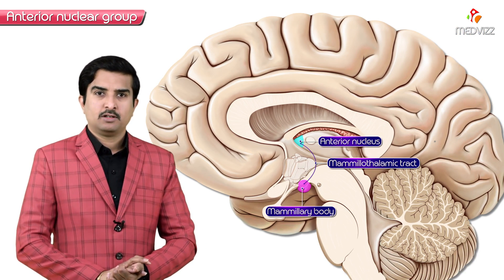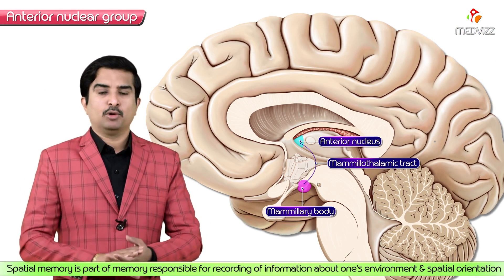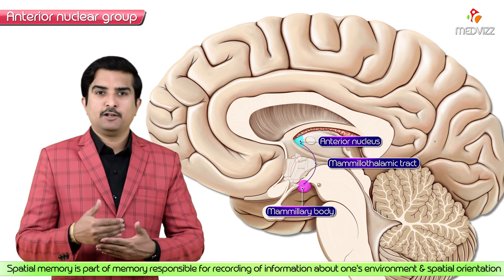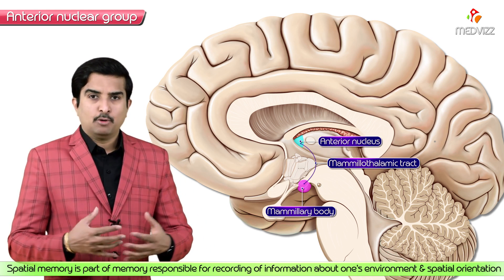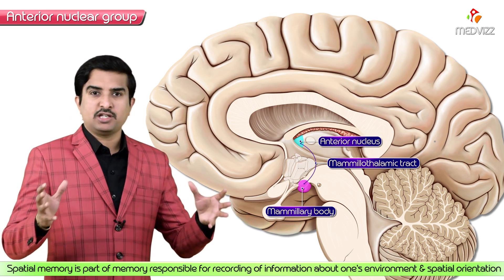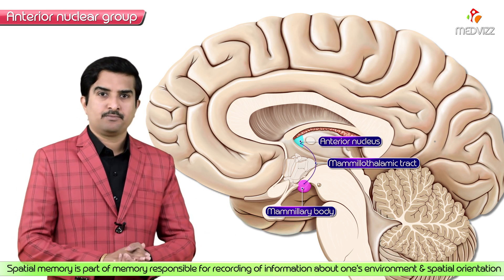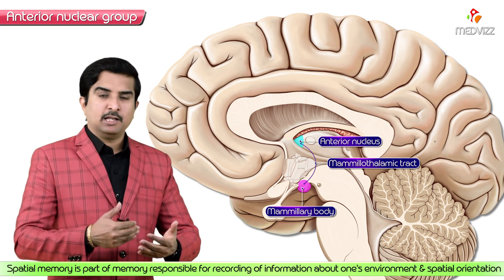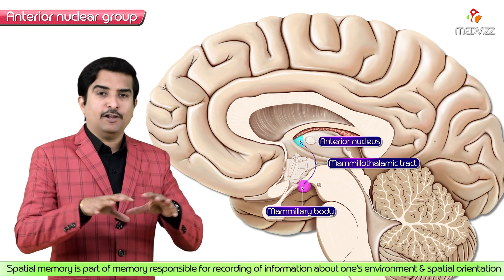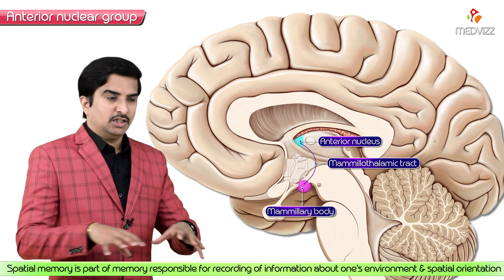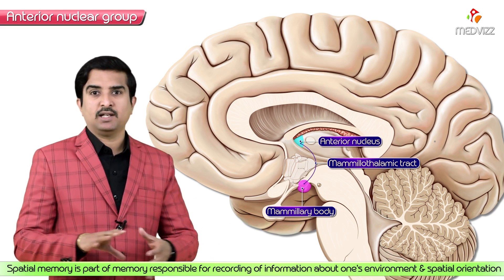Spatial memory is a type of memory responsible for recording information about one's environment and spatial orientation. For example, if you are staying in a particular city for quite a long period of time, you become well familiar with the routes and maps of the city.